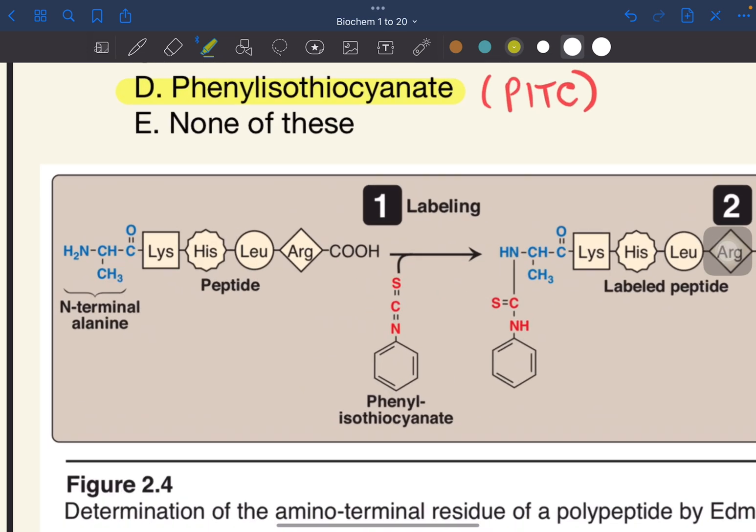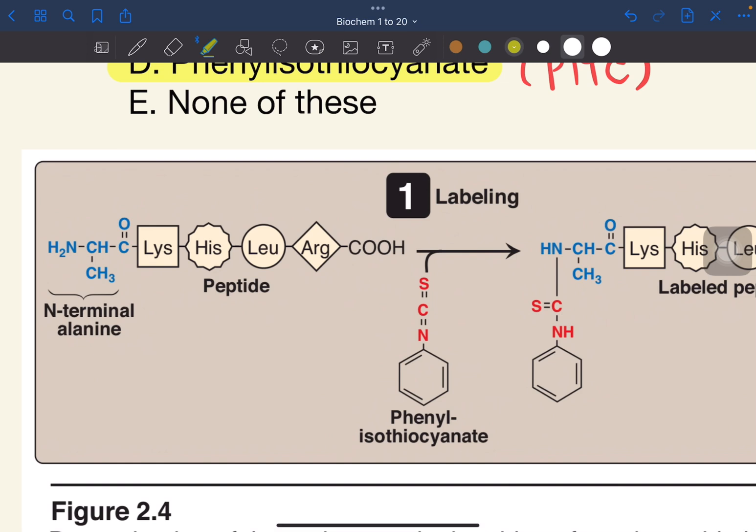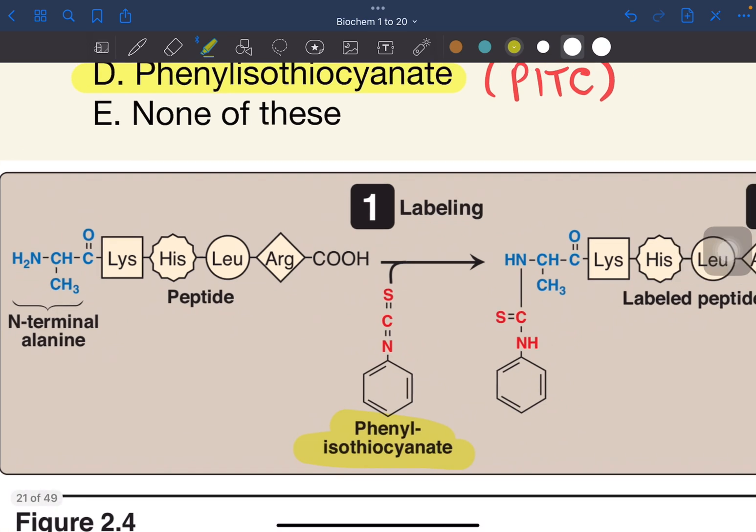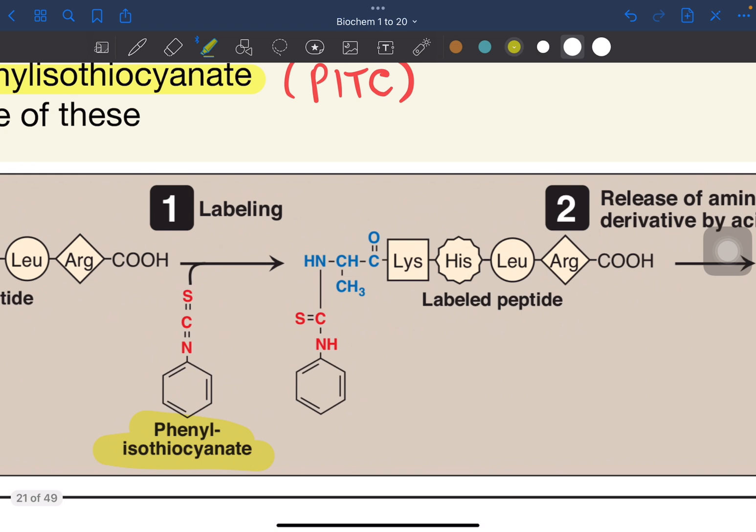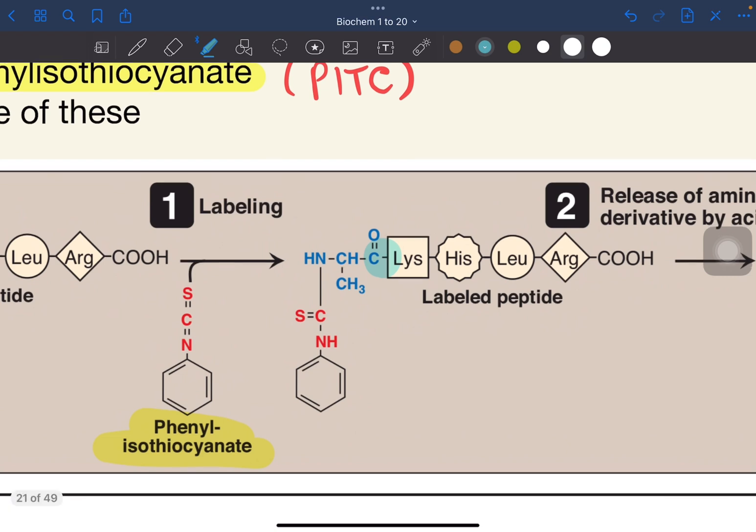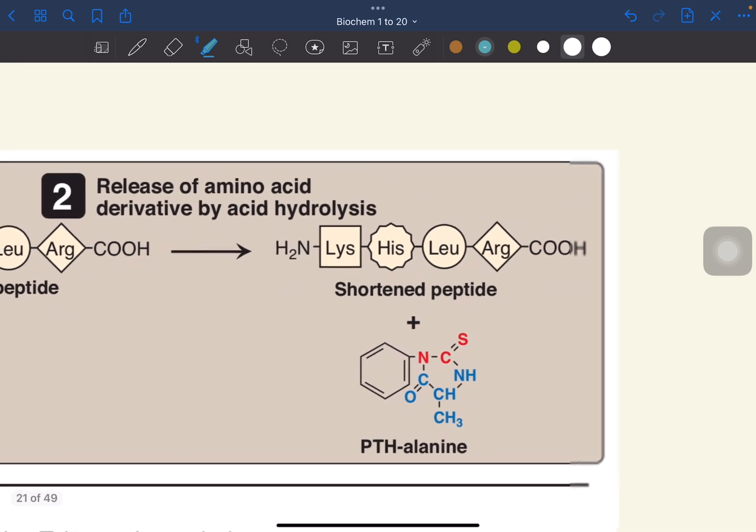Suppose this is the amino acid chain to be identified. When doing Edmond's degradation, PITC is added to the peptide. The resulting derivative will make the N-terminal peptide bond unstable. Since it's unstable, it's easier to hydrolyze without affecting other peptide bonds, as you can see here.